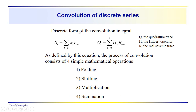Now the process we use to calculate the quadrature trace is almost identical — it is identical, just with different terms. We calculated the seismic trace through the convolution of the wavelet with the reflectivity sequence in discrete form, since we're dealing with sampled data. We do the same thing with the quadrature trace, where this is the Hilbert transform operator and this is the real seismic trace.